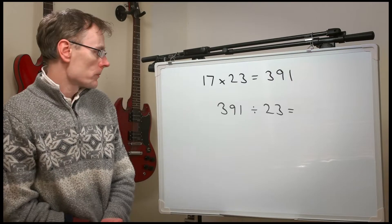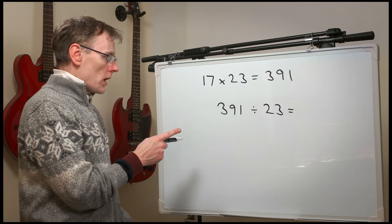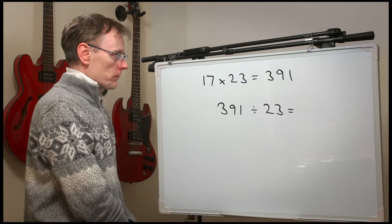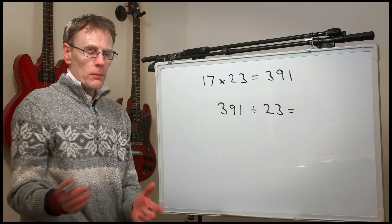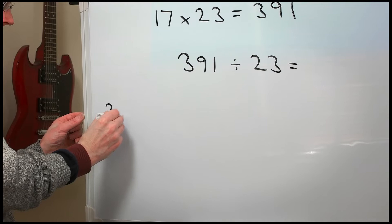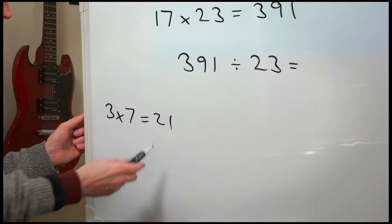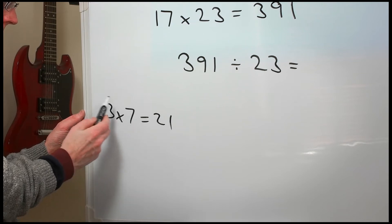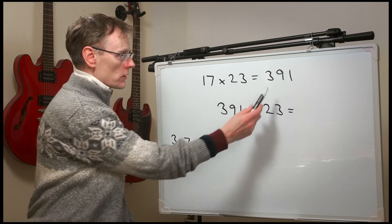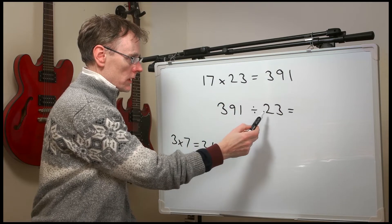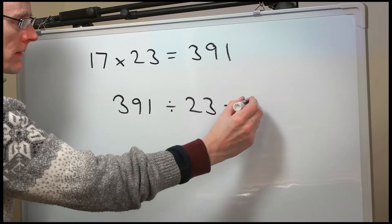What about this one? 391 divided by 23. Well, we're working backwards. You know, 3 times 7 is 21. That tells you that 21 divided by 7 is 3. So 391 divided by 23 is 17.